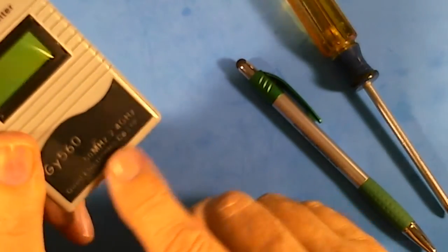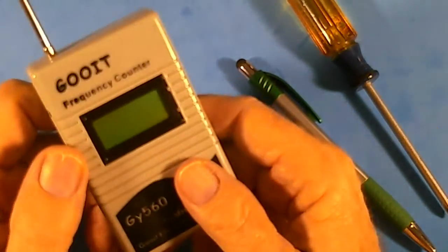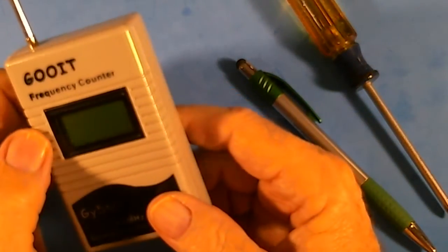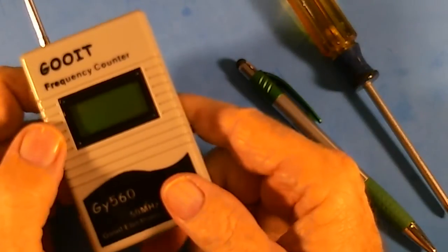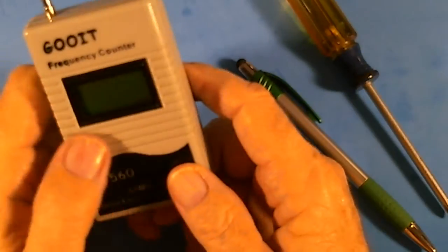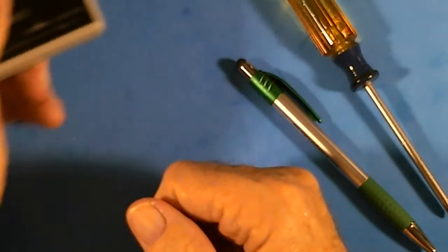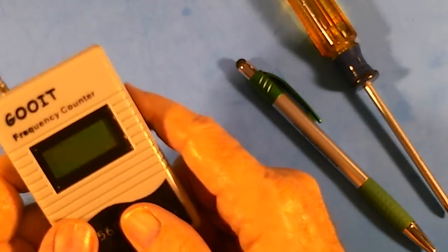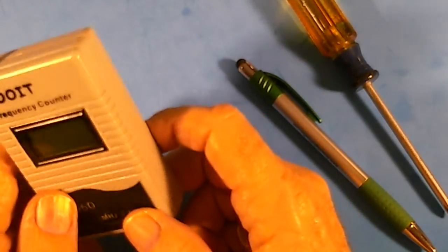A frequency counter is a good thing to have in your shack for when you're looking for stray frequencies. You can go around and find them and see, 'well okay, maybe that frequency is what's getting into my radio.'